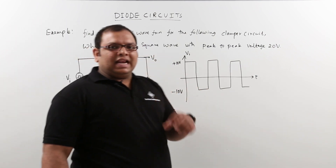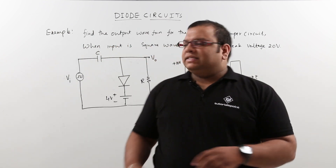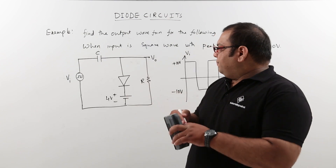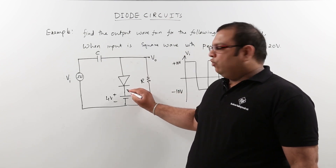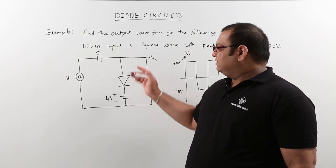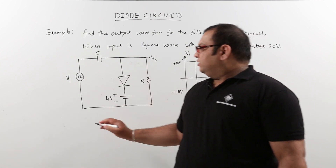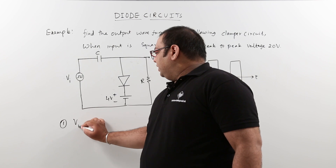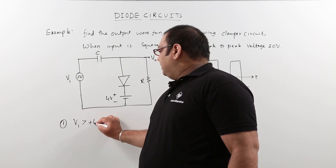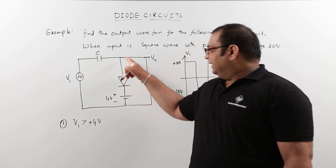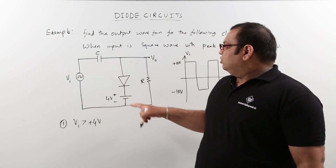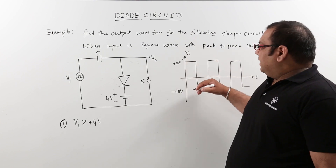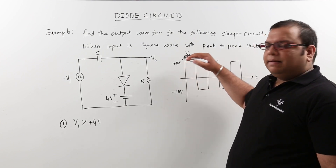When analyzing the clamper circuit, we first need to find the maximum value to which the capacitor will get charged. Observing the circuit, at the negative peak we have +4V, so the capacitor will charge when the input is greater than +4V. The first condition is: the diode will conduct when the input is greater than +4 volts. Since the input has only two values — either +10V or -10V — the positive peak is +10V.